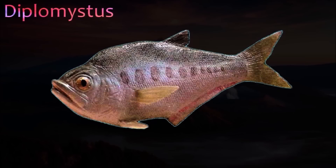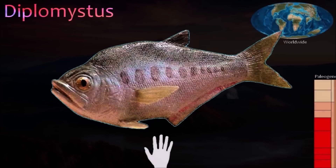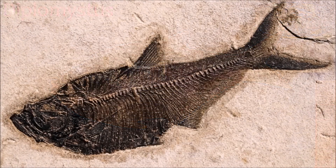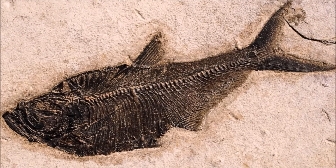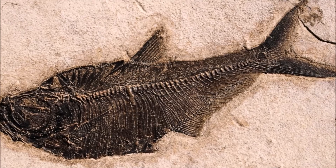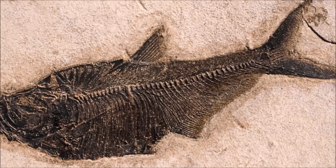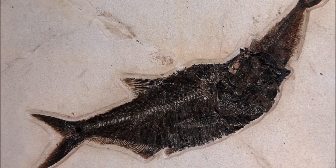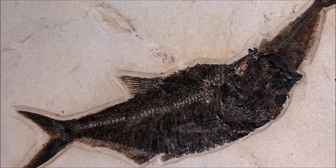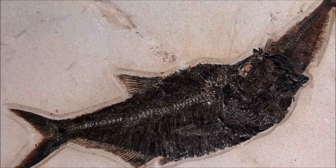A distant relative of herrings and sardines, Diplomistus was a widespread freshwater fish. Many of the best specimens have been found in the Green River deposits of Wyoming. It had a single dorsal fin, pairs of small pectoral and pelvic fins, and an anal fin that stretched back to the narrow base of the tail. The tail itself was deeply forked, with the upper and lower parts of the fin being of equal size. A number of smaller fish have been preserved in the stomachs of Diplomistus fossils.